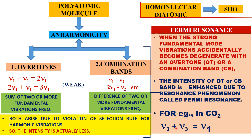For example, in the CO₂ molecule, there are four normal modes of vibration, but there will be more peaks — more signals — because of overtones and combination bands. These additional bands won't occur in homonuclear diatomic molecules.